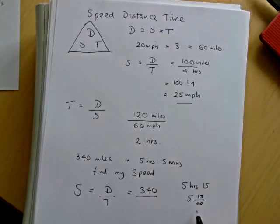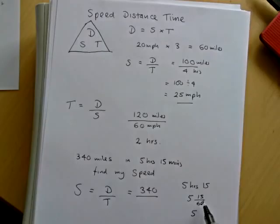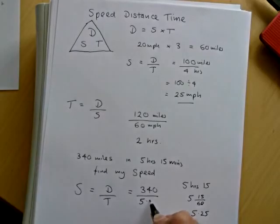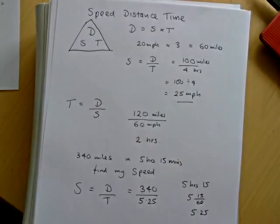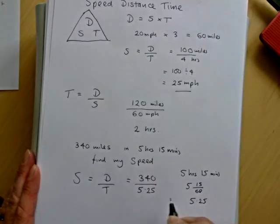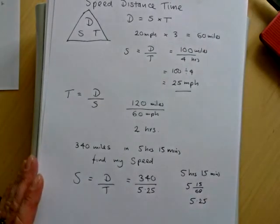Now 15 over 60, if you use your calculator, you'll see that's 0.25. So to answer this question then I've got to do 340 divided by 5.25. And you should know that 15 minutes is a quarter of an hour and a quarter as a decimal is 0.25.